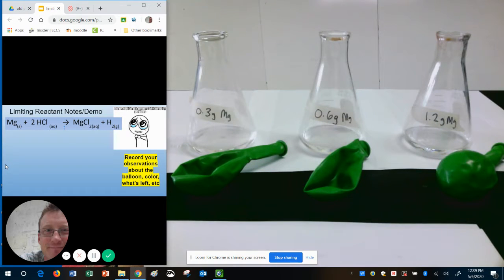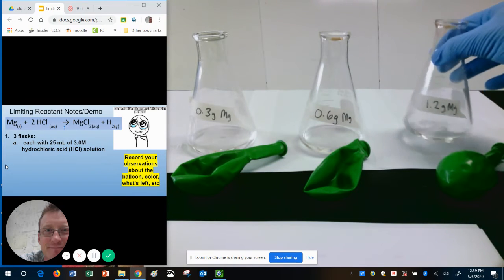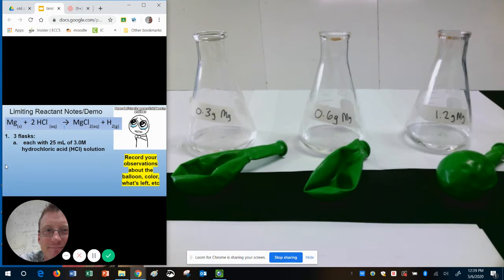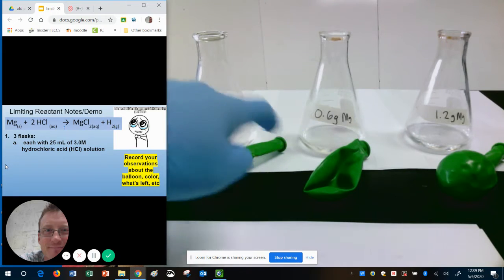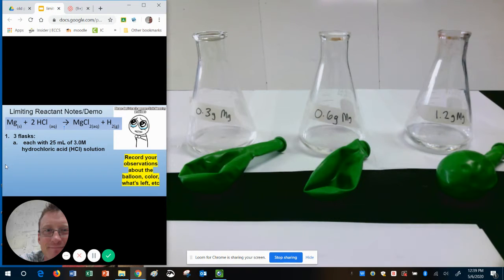If you see my screen here, in each of these three flasks I have 25 milliliters of liquid, the HCl. In each of these balloons we have magnesium powder. The amount is given on the tape: 0.3 grams in the first balloon, 0.6 in the middle one, and 1.2 grams of magnesium in the third.